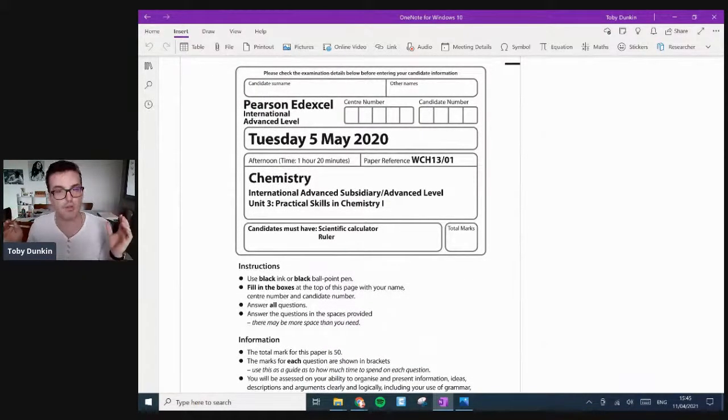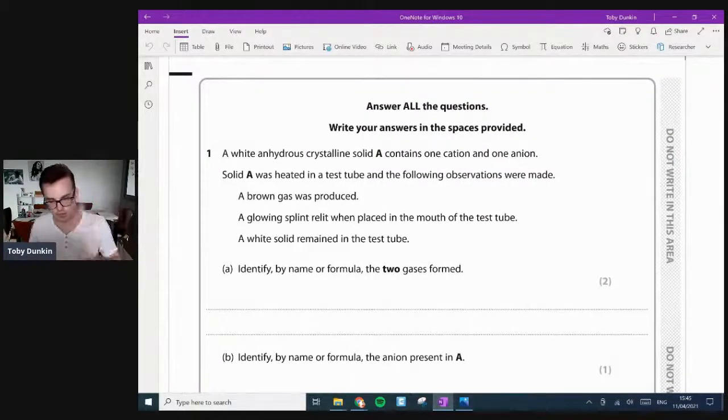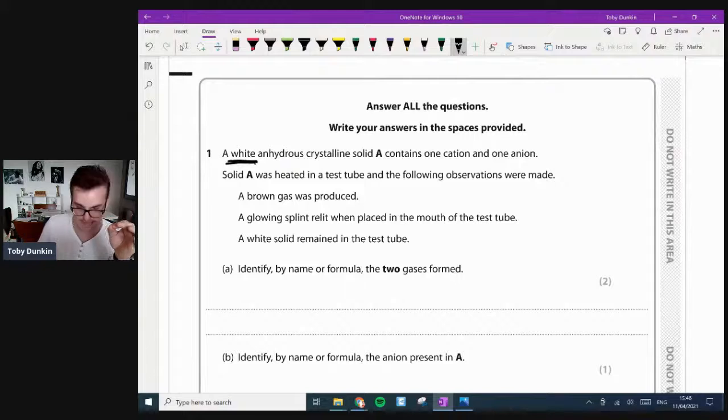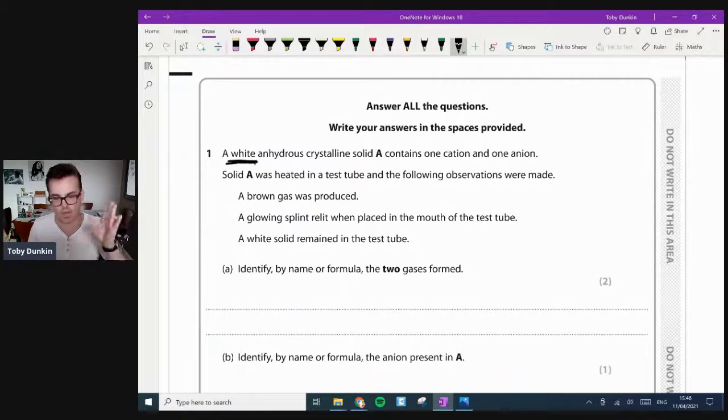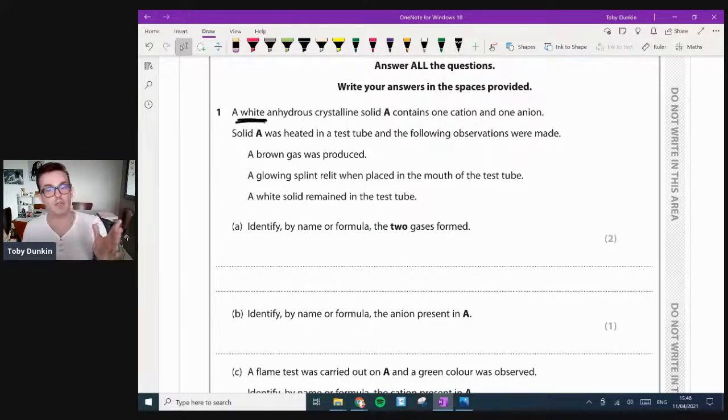Okay, this is a nice short paper. This is only an hour and 20. Much shorter than the other two. So this should be a quick one, really. 50 marks instead of 80. Okay. So a white anhydrous crystalline solid A contains one cation and one anion. Well, the first thing that we can do straight off the bat here is recognize that it's white. And what that means is it's not going to contain a transition metal.